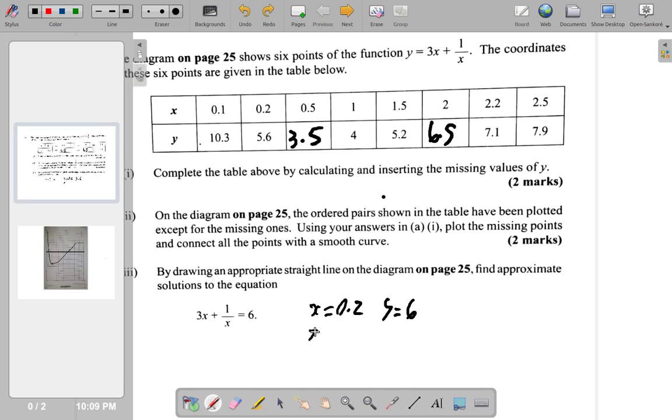They intersect here. They intersect when x is 1.8 and y is equal to 6. So, x is 1.8 and y is, of course, 6. So, here, the solutions are x is equal to 0.2 and 1.8.